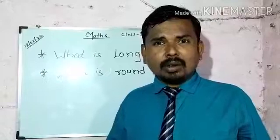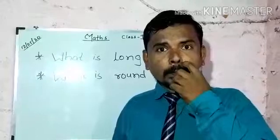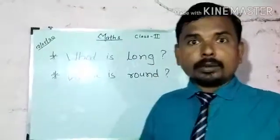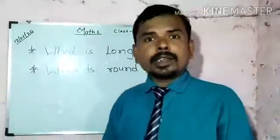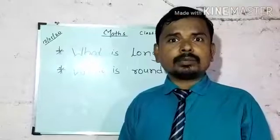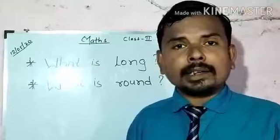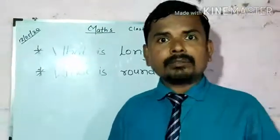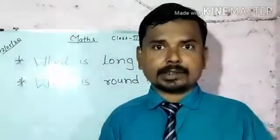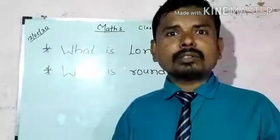Now what is this? Yes, right — a pencil. This is also long. Now children, you have seen more examples: apple, orange, scale, pencil. You understand what is long and what is round. Look around you, find what is long and what is round, and make diagrams. Name five long and five round objects, draw their figures, and write the names in your copies.